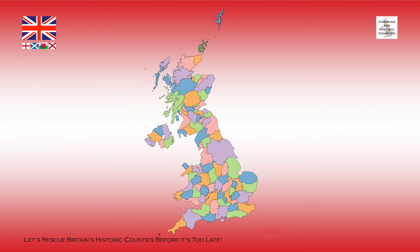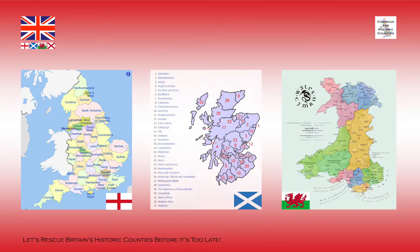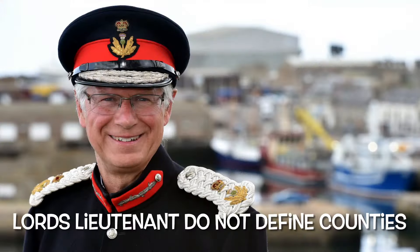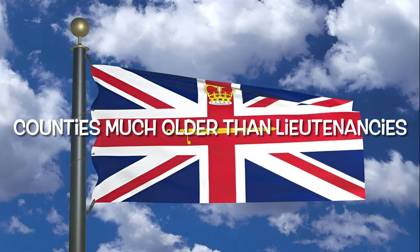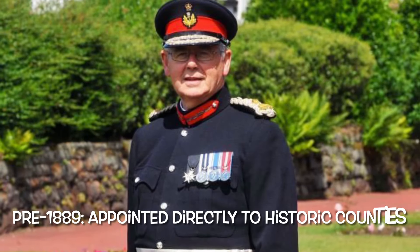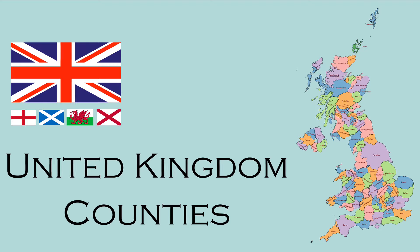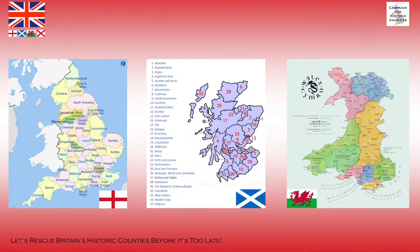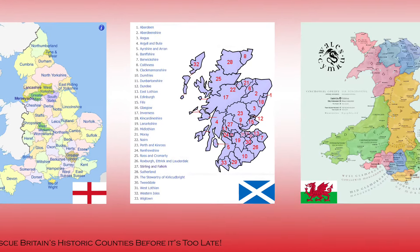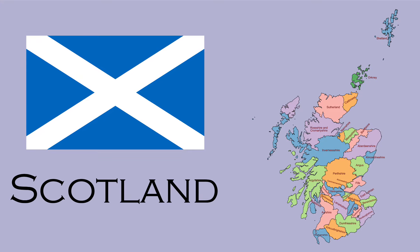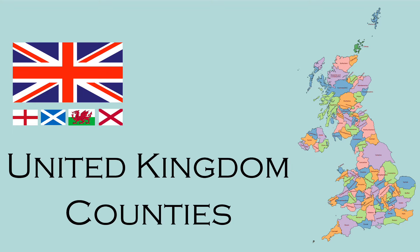Definition 2 refers to ceremonial counties, or lieutenancy areas — the geographical area defined for each of His Majesty's Lords-Lieutenant. The office of Lord-Lieutenant was created in the 1540s for the purpose of organizing the local militia. The office has never defined the counties, which predate that office by many centuries. Prior to 1889, the Lords-Lieutenant and sheriffs were appointed directly to the historic counties, and their areas remained very close to the historic counties until 1974. There is no practical obstacle to a return to this approach. In contrast to England and Wales, many of the lieutenancies of Scotland are closely aligned with an historic county and not aligned with current local government areas, which presents no problem to their operation.